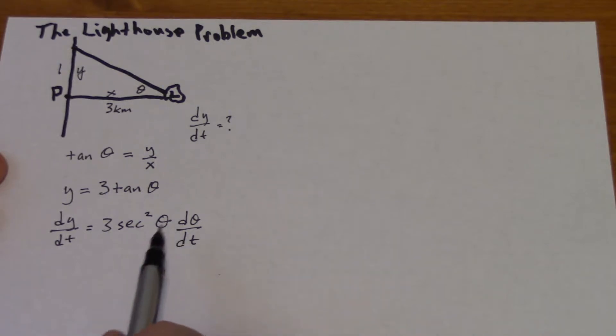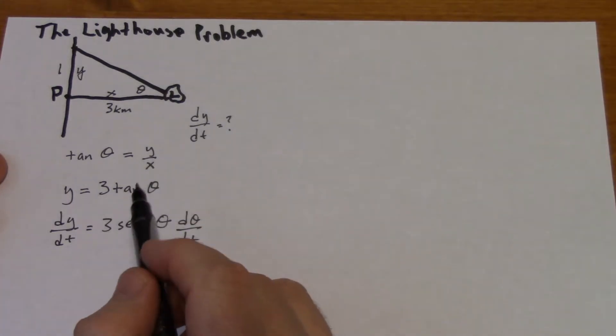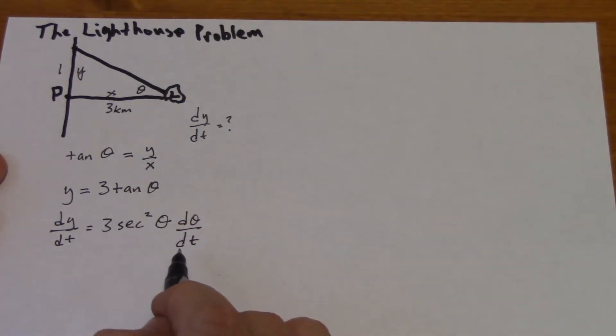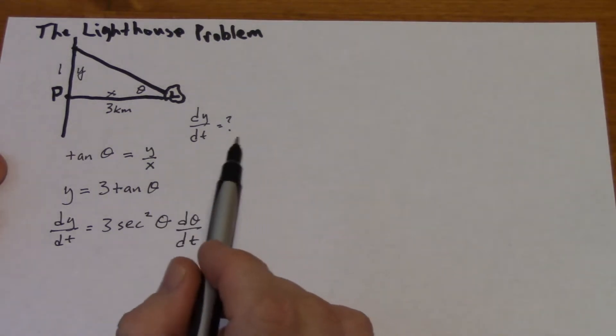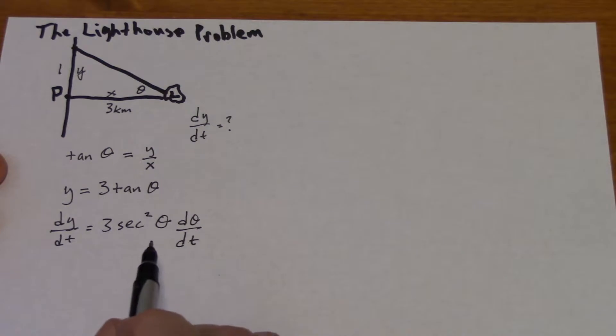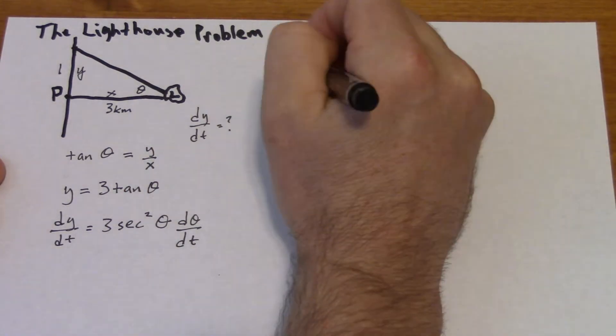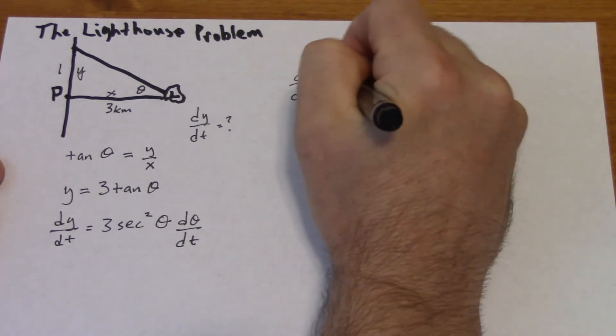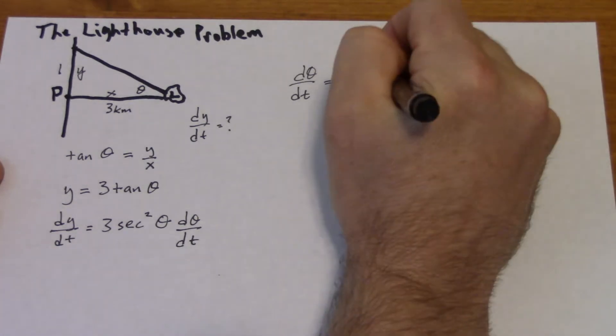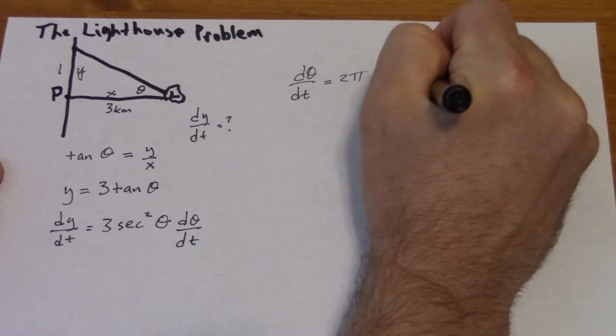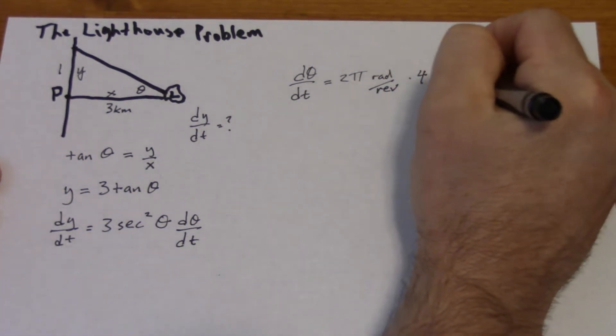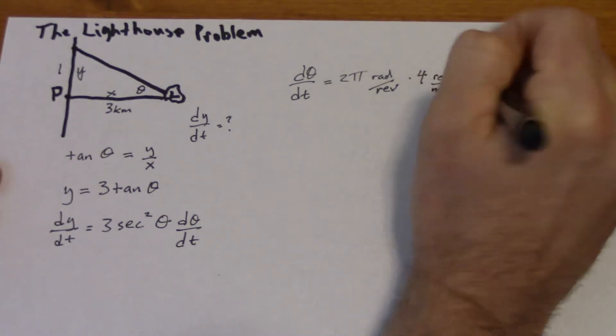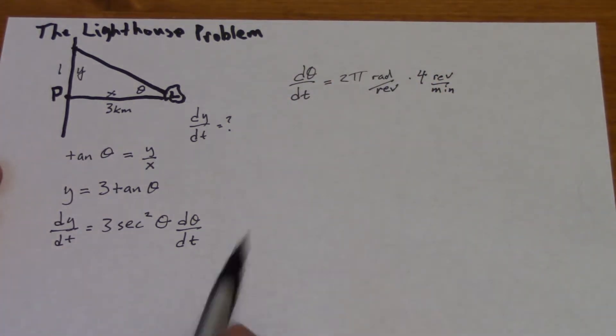It gets a little more complicated. We've got to figure out what dθ/dt is. They told us that the light rotated around four times per minute, but that's not what dθ/dt is. That's four revolutions per minute. How far is it in one revolution in terms of the angle? Well that's pretty simple. dθ/dt is going to be 2π, because that's a whole circle, so 2π radians per revolution, times 4, because that's how many times they said it was rotating around. So dθ/dt is going to be 8π radians per minute.